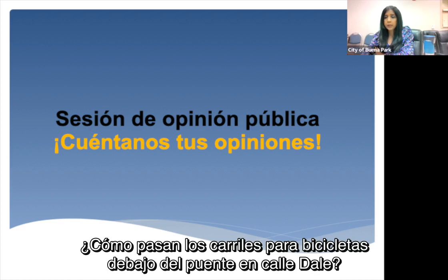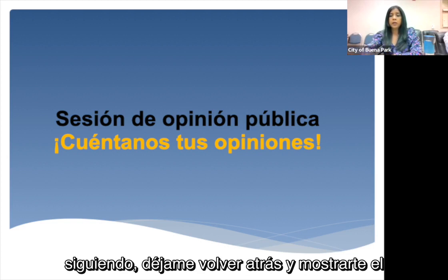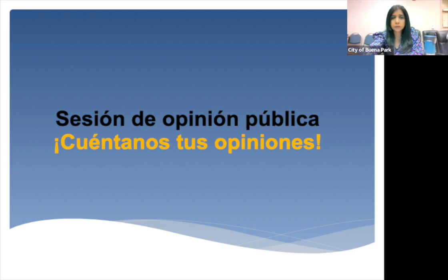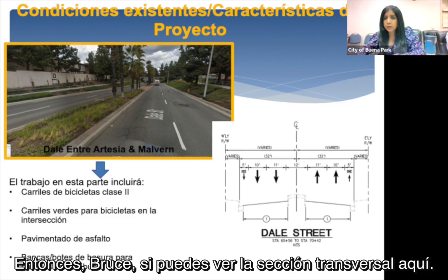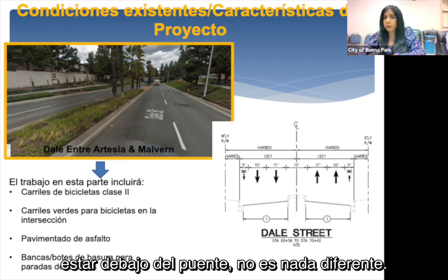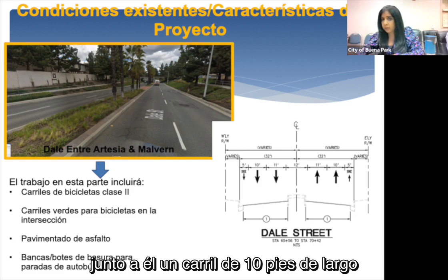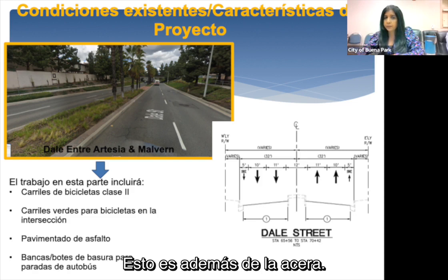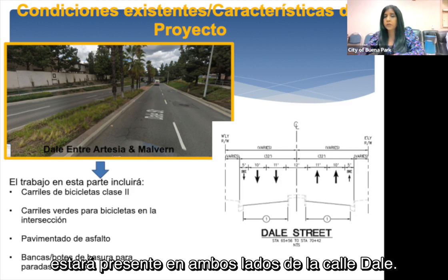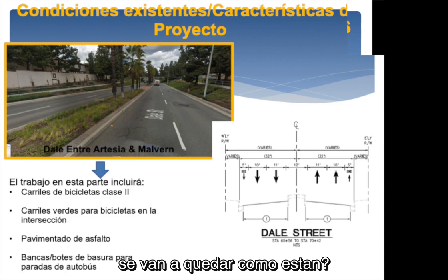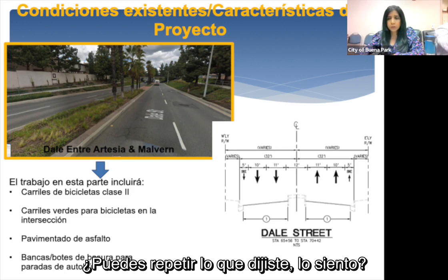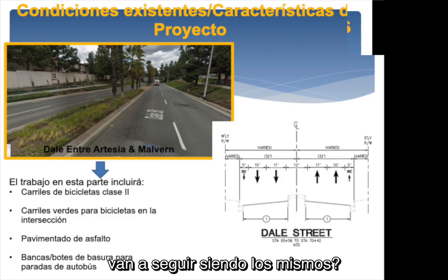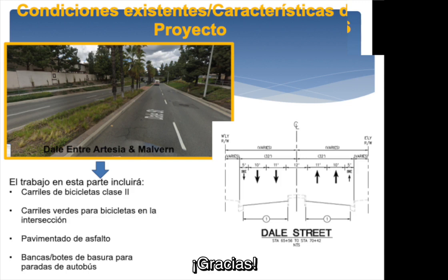Bruce Johnson asks how bike lanes go under the bridge on Dale. It's exactly the same cross section we're following — 11-foot by 11-foot travel lane, followed by a 10-foot travel lane, and adjacent to that a five-foot bike lane, in addition to the sidewalk on both sides of Dale. The landscaping on the right and left will remain the same as they are now — we are not going to touch that area.